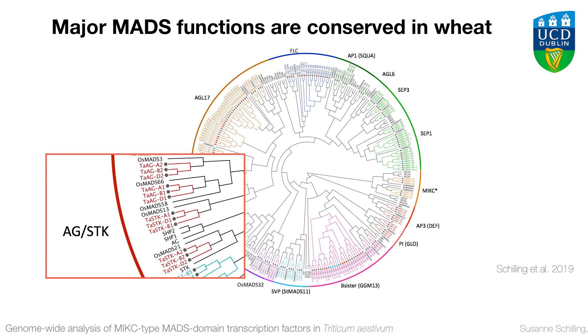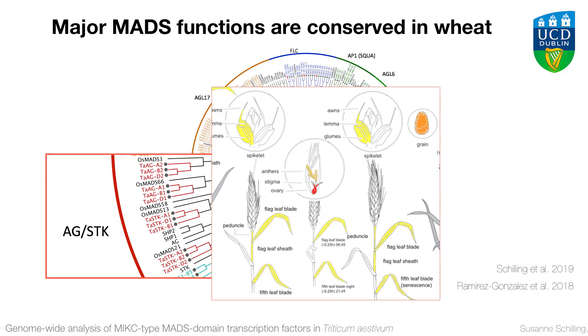Just to show you one example: the AGAMOUS and SEEDSTICK family. We have the first AGAMOUS gene from the A, B, and D genome, then the OSMADS from rice, and then more distantly related the Arabidopsis gene. From Arabidopsis and rice, we know that this subclade of genes is known to regulate reproductive organ development and seed development. If we look in published RNA-seq data, we can see very nicely a very narrow expression just in the ovule or in the carpel, in the stamen, and also in the grain. We find again and again for different subclades that these expression patterns are very well conserved in Arabidopsis, in rice, and then also in wheat.